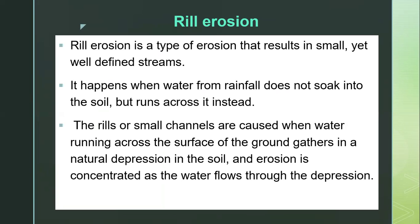Rill erosion is a type of erosion that results in very small yet well-defined streams. It happens when water from rainfall does not soak into the soil but runs across it instead. Loose or small channels are caused when water running across the surface of the ground gathers in a natural depression in the soil, and erosion is concentrated as the water flows through that depression.